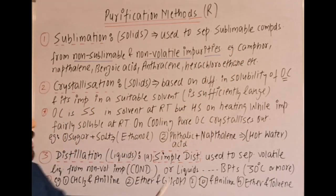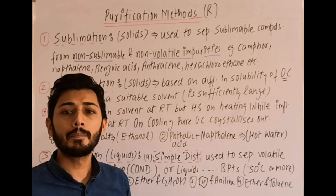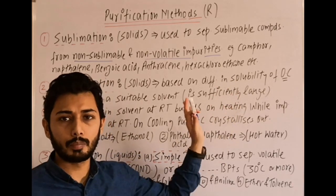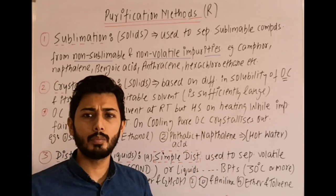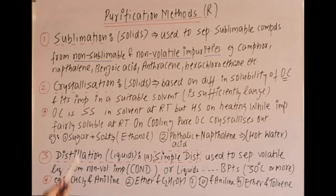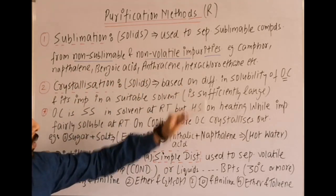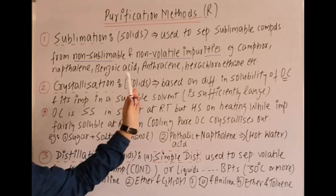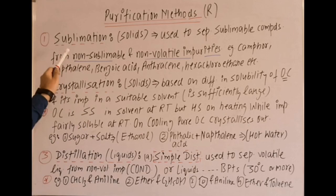Important examples for sublimation: camphor, naphthalene, benzoic acid, anthracene, hexachloroethane, anthraquinone, etc. You can add more examples from your question bank or NCERT. These compounds can be separated from their impurities by using the sublimation method.